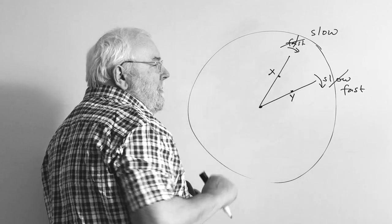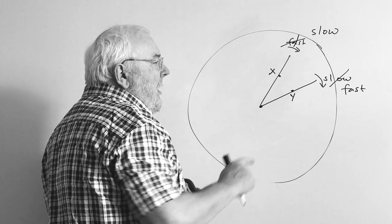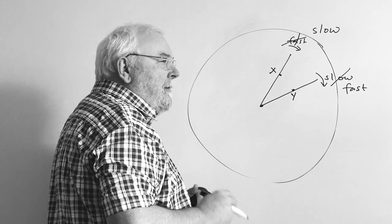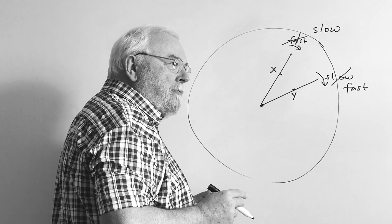So Y was ahead of X before the hands crossed and Y is also ahead of X after the hands crossed. There's no overtaking in this race.